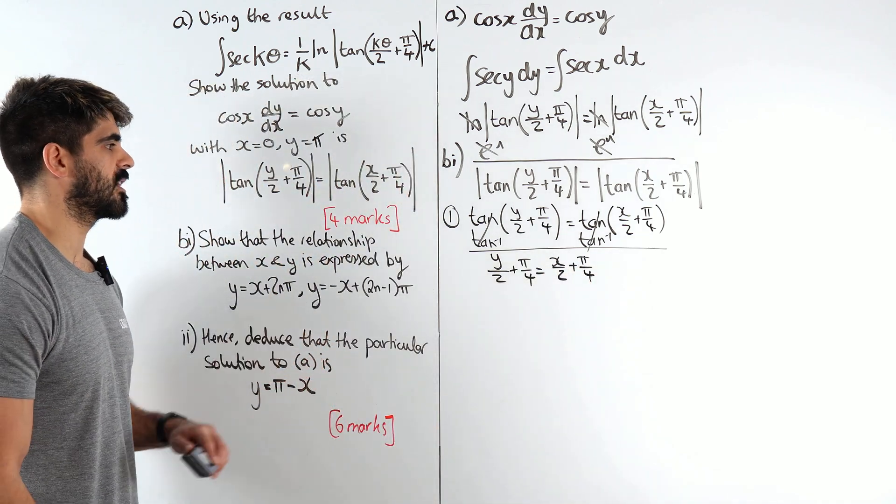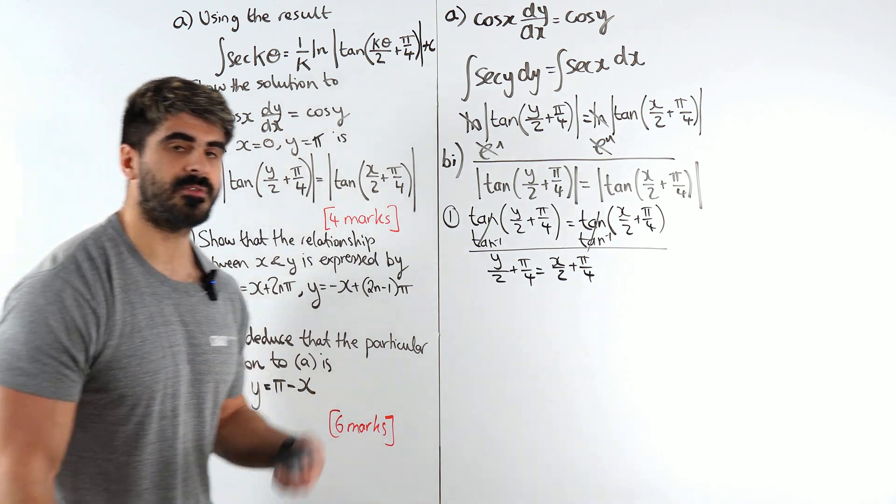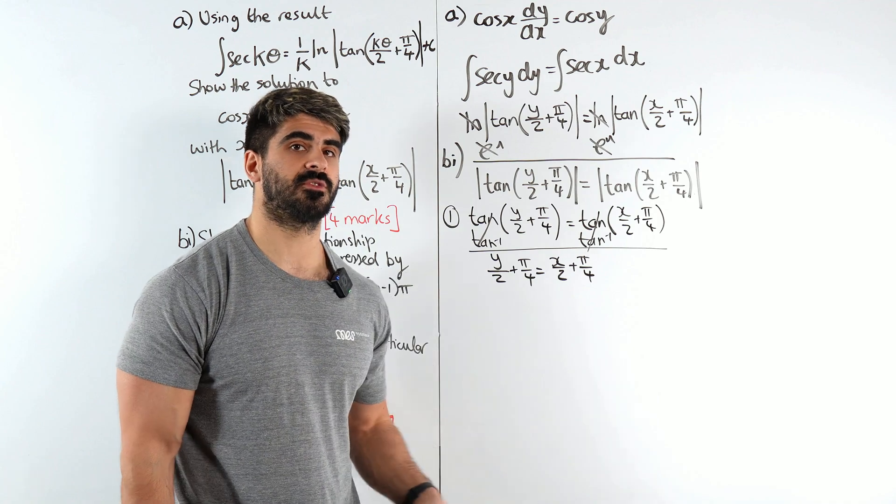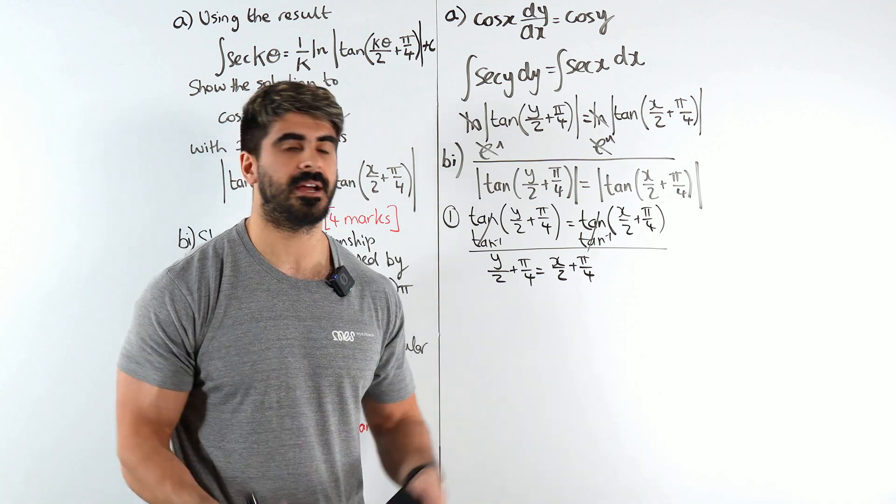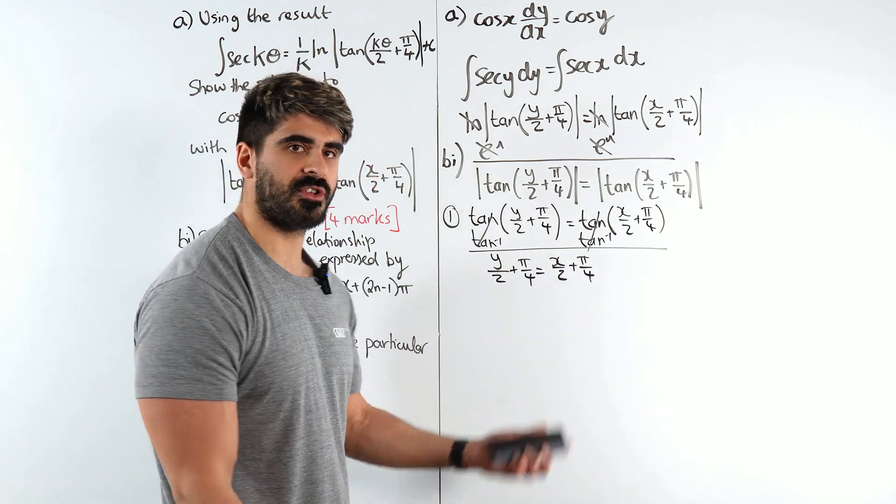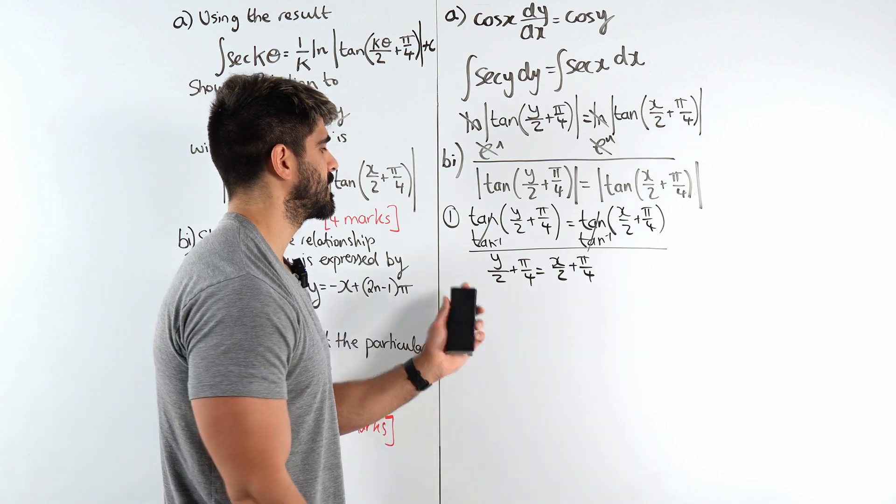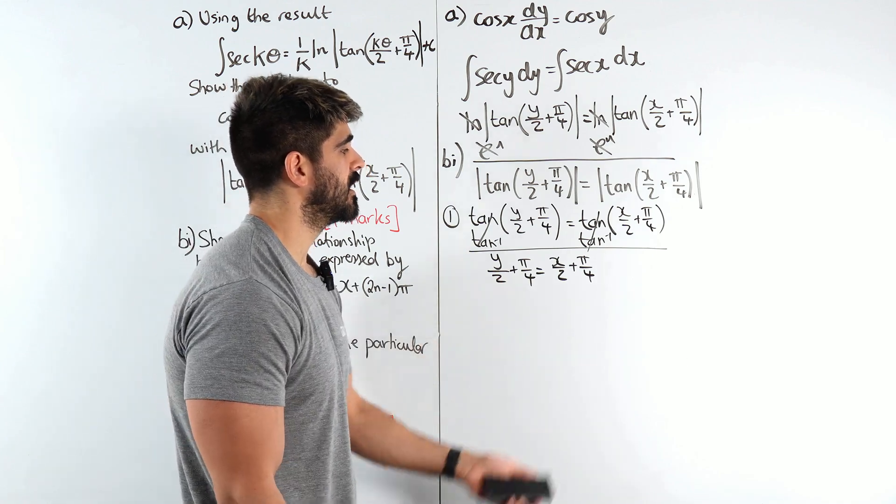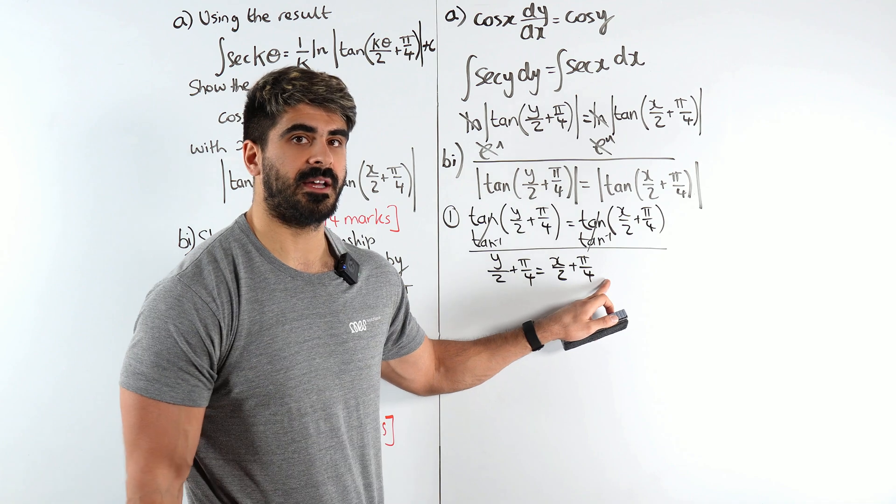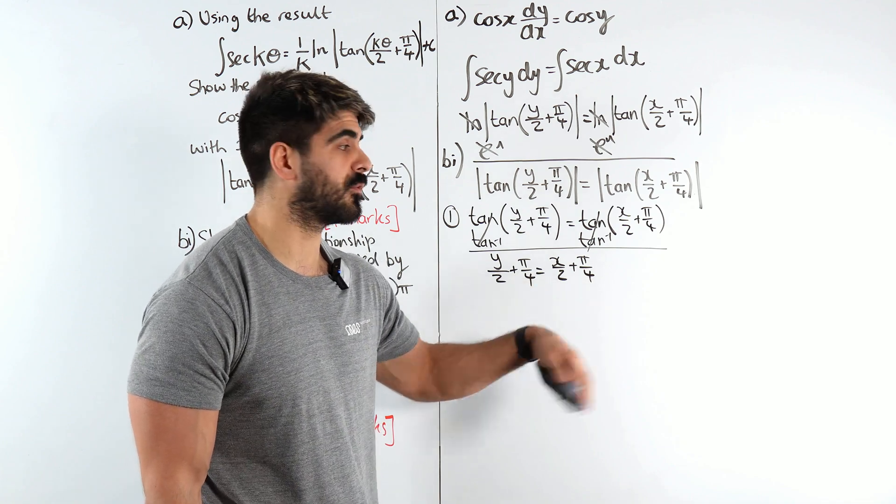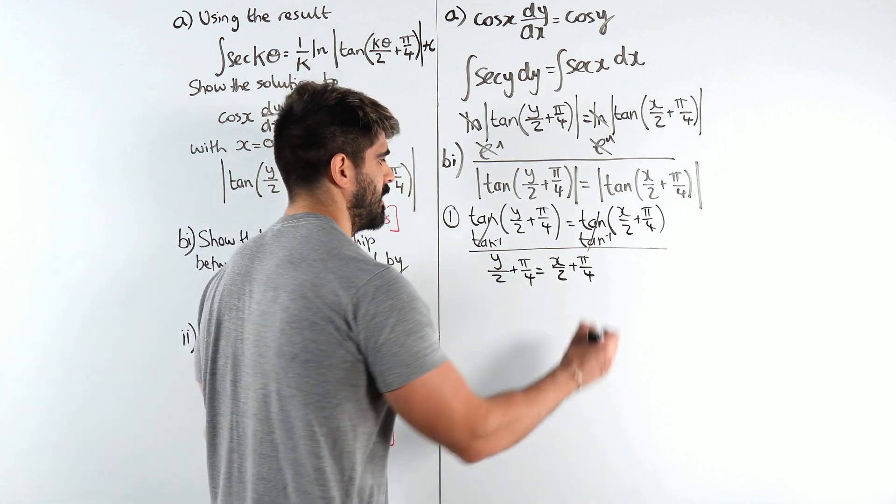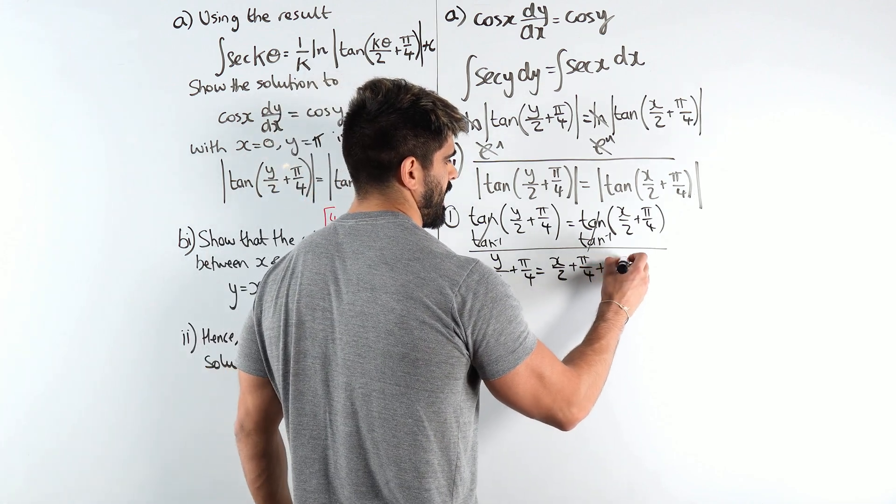They look at the solution and wonder where does n even come from? Well remember the tan graph cycles every 180 degrees if you're in degrees and pi if you're in radians. Just like cos and sine cycle every 2 pi or 360 degrees, tan cycles every pi. So to find another solution we could add pi, 2 pi, 3 pi, 4 pi etc.